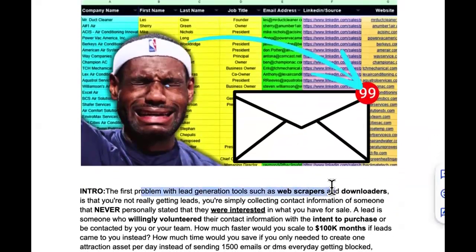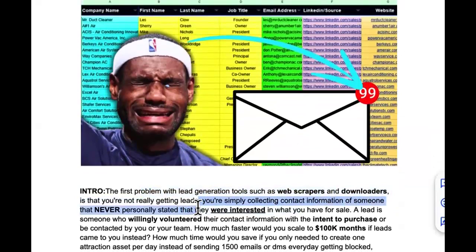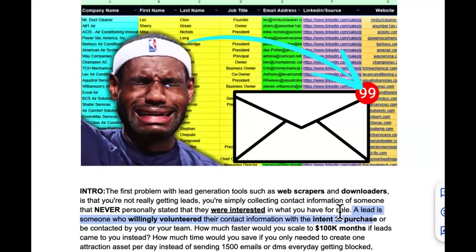The first problem with lead generation tools such as web scrapers and downloaders is that you're not really getting leads — you're simply collecting data. You're collecting information from someone who never personally stated they were interested in what you have for sale. A lead is someone who volunteered willingly their contact information with the intent — this is the part we're all missing — the intent to purchase or be contacted by you or your team.